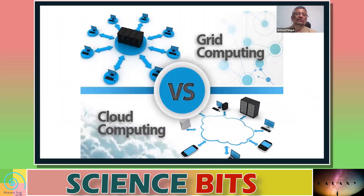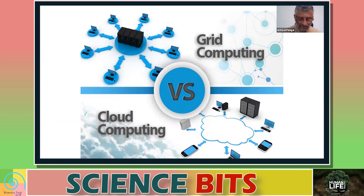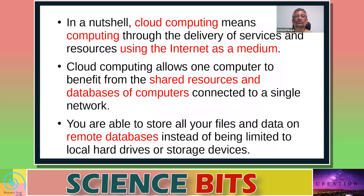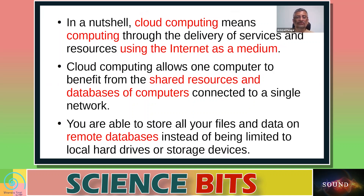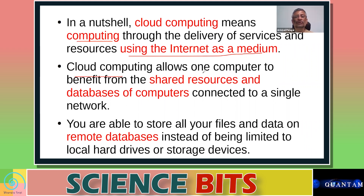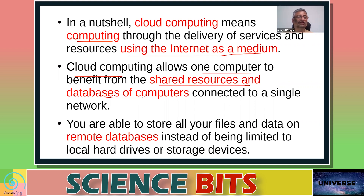Today, in the context of internet, computers, and information technology, we talk of grid computing and cloud computing — what are they and how are they different? Cloud computing is computing using the internet as a medium, where we allow one computer to benefit from the shared resources and databases of computers connected to a single network like the internet.